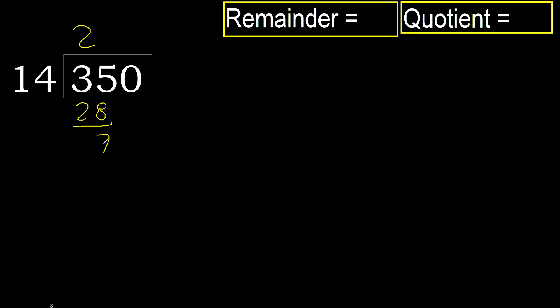Subtract, then next: 70. 14 multiplied by 6 is greater, so multiply by 5 — 70 is not greater, ok.